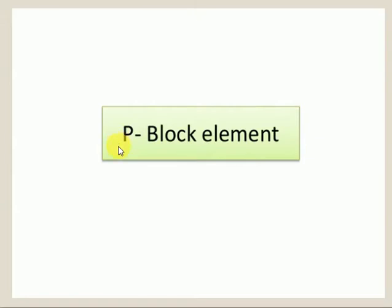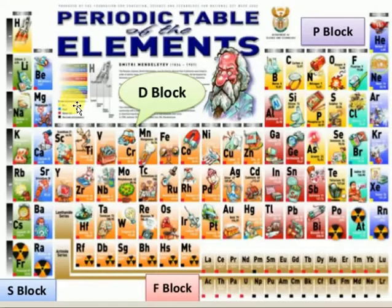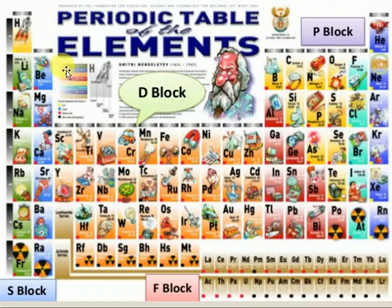The P-block elements are located in the right-hand side of the periodic table. Consider this modern periodic table. This modern periodic table has been divided into four blocks. This is called S-block elements. S-block elements contain alkali metals and alkaline earth metals. And here the P-block elements are there.